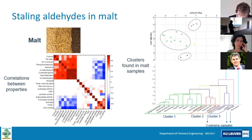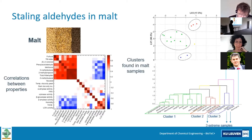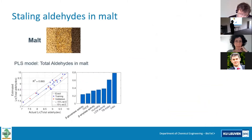We can also perform principal component analysis to learn about clusters in the samples. Every dot here is one of the samples in the data, and we can identify certain clusters of malt that have similar properties. We can find relations between the direction where they are located in the principal component space, and this already tells us information about how different origins of the malt and different parameters during the malting process result in different aldehyde contents. So the main question is: can we predict what is the total content of aldehydes in the malt based on its physical-chemical properties? And the answer is basically yes, we managed to do it.